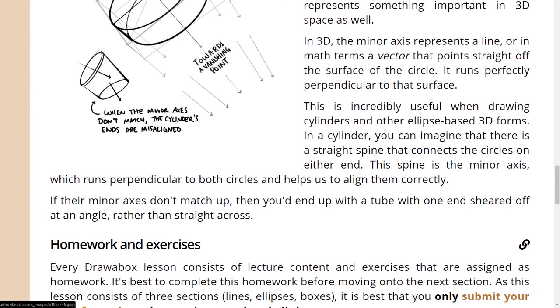This is incredibly useful when drawing cylinders and other ellipse-based 3D forms. In a cylinder, you can imagine that there is a straight spine that connects the circles on either end. This spine is the minor axis, which runs perpendicular to both circles, and helps us to align them correctly. If their minor axes don't match up, then you'd end up with a tube with one end sheared off at an angle, rather than straight across.